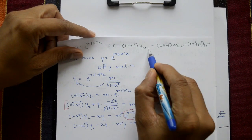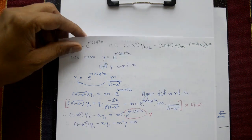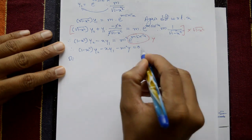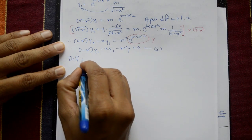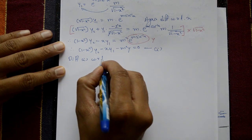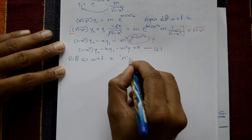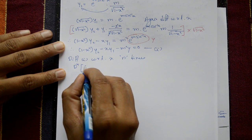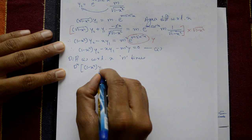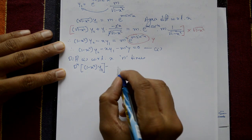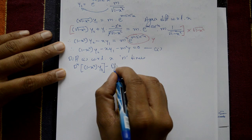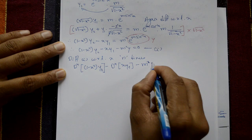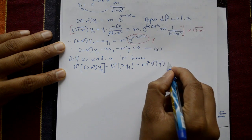Now, we prove that y_{n+2}, differentiate 2 times plus n, using Leibniz's rule. Differentiate equation 1 with respect to x, n times. That means d raised to n of 1 minus x square · y2, minus d raised to n of second term x·y1, minus m square is constant, d raised to n of y only, equal to 0.